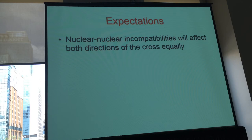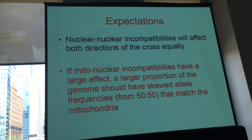What are the expectations? If nuclear-nuclear incompatibilities are very important, the two reciprocal crosses would be similar to each other, because the only thing that differs is the mitochondria. On the other hand, if mitonuclear incompatibilities are important, the reciprocal crosses should be very different, and we should see a larger part of the genome with allele frequencies skewed from the expected 50-50 towards the alleles of the population that matches the mitochondria.